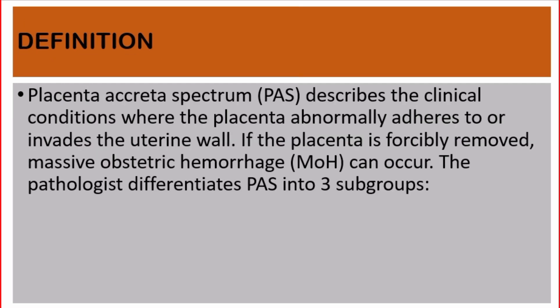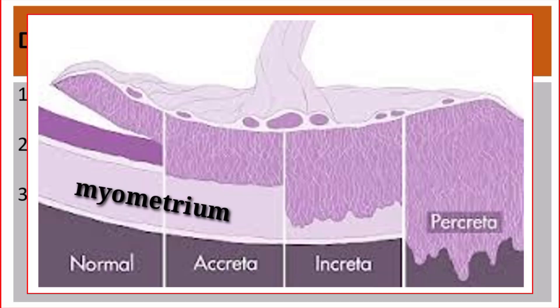Definition. Placenta accreta spectrum describes the clinical conditions where the placenta abnormally adheres to or invades the uterine wall. If the placenta is forcibly removed, massive obstetric hemorrhage may occur. The pathologist differentiates placenta accreta spectrum into three subgroups: one, placenta accreta, defined by abnormal attachment to the myometrium with an absent decidua; two, increta, representing invasion of the villous tissue deeply into the myometrium but not reaching the serosa; three, percreta, where placental villi completely invade the myometrium, reaching the serosa or beyond.